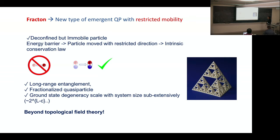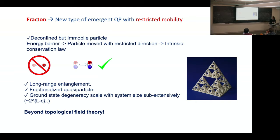The ground state only has finite correlation lengths but has large entanglement structures. Quasiparticles can carry fractional quantum numbers and can have non-trivial braiding statistics in 3D and higher. The ground state degeneracy is not a topological degeneracy but a global degeneracy which cannot be lifted by any local operators. Such ground state degeneracy scales with system size in an extensive way for type-1 fractons, and it is also geometry dependent, which excludes it from usual TQFT descriptions.